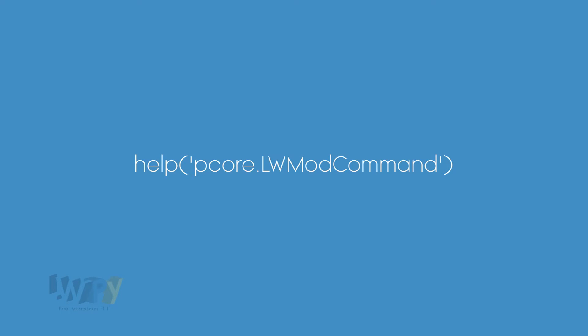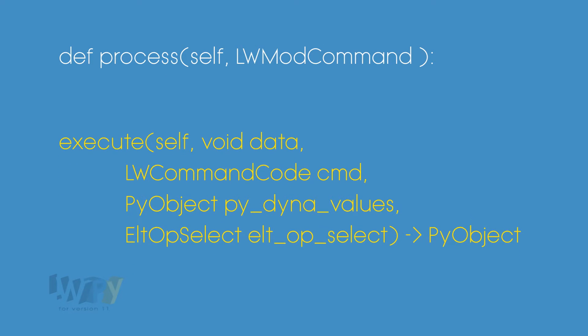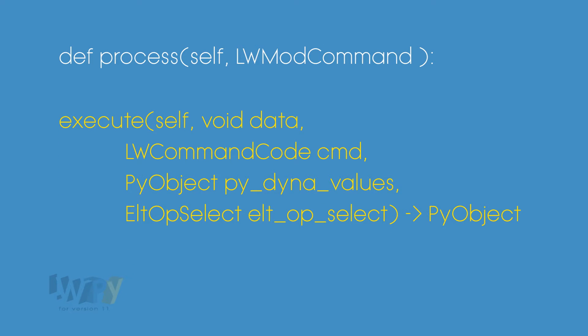In the PCOR console, type... We have a lot of methods defined for this class, but the one we're interested in is execute. The execute method takes five arguments: self, data, LightWaveCommand code, a PI object defined as DynaValues, and the type of selection to perform the execution. It then returns a PI object.